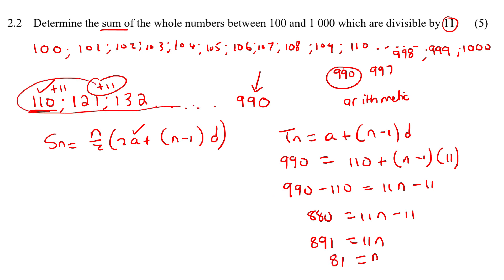So there are 81 terms in this pattern over here. Okay, so we can say the sum of 81 terms. So a is 110, 81 terms, and then the common difference is 11.